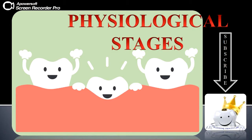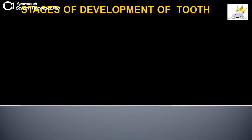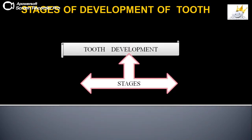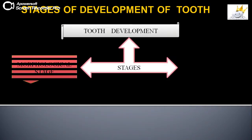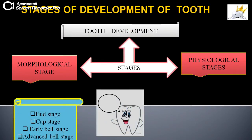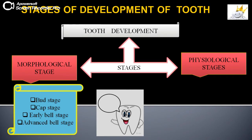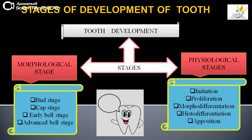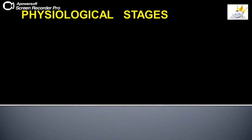Welcome to this lecture. Today we are going to discuss the physiological stages of development of the tooth. Tooth formation is a complex process involving two stages: the morphological stage and the physiological stage. The morphological stage involves bud stage, cap stage, bell stage, and early and advanced bell stage. The physiological stage includes initiation, proliferation, morpho-differentiation, histo-differentiation, and apposition. As tooth development proceeds through various morphological changes, many physiological changes also take place in different components of the tooth germ, termed as physiological processes.